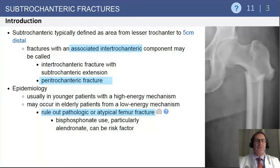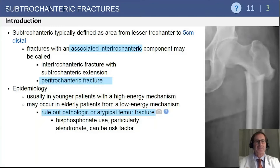For subtrochanteric fractures, they are typically defined as from five centimeters below the lesser trochanter, anywhere distal to the lesser trochanter by five centimeters. Any fractures with more proximal extension are more commonly called peritrochanteric fractures or intertrochanteric fractures with subtrochanteric extension. In patients with a low energy mechanism, when you see a subtrochanteric fracture, you want to look at other potential pathologic mechanisms, including tumor or bisphosphonate use.